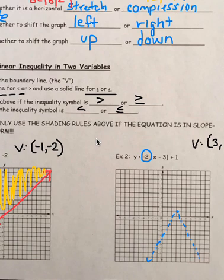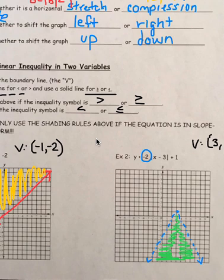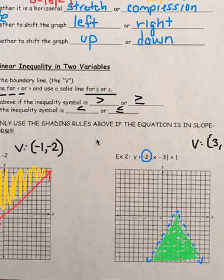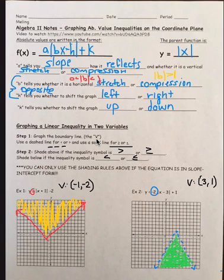And doing my best with the dashes — there's the graph. Since it's less than, I need to fill in below it. I like to do the little Christmas tree shading. On your paper, if you're using pencil just shade it in lightly. That's quickly how we do graphing absolute value inequalities on the coordinate plane. Thank you.